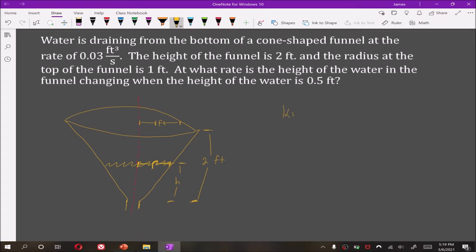So what do we know? We note the volume is decreasing at a rate of 0.03 cubic feet, so dV/dt is negative 0.03 cubic feet per second. We want to find how quickly the height of the water is changing when it's at half a foot.